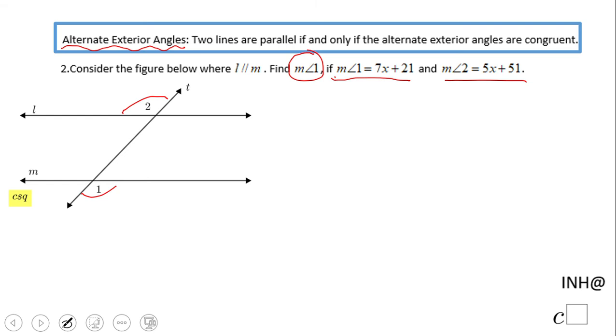they're on the outside of the parallel lines and one is on one side of the transversal t and one is on the other side of the transversal t. So alternate exterior angles. Moreover, when we notice that these